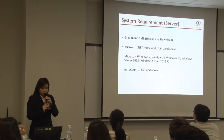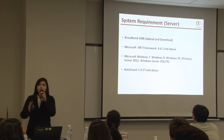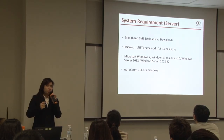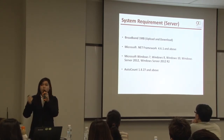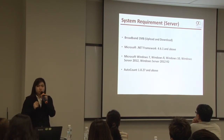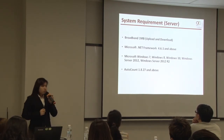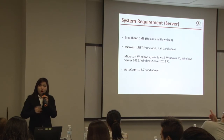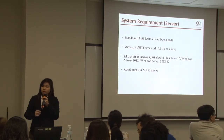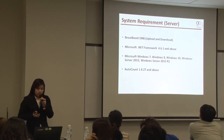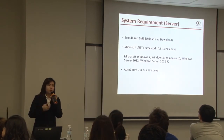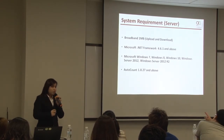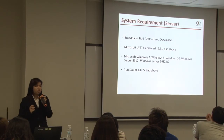This is the system requirement for AOTG. For people on the go accessing AOTG, the most important thing is just the internet and the device. For the server, the key requirement is broadband of 1MB for upload and download. Others are standard requirements — most users are already using Windows 7 or above. For AutoCount Accounting, the required version is 1.8.27 and above.